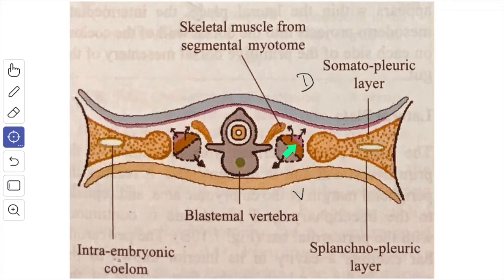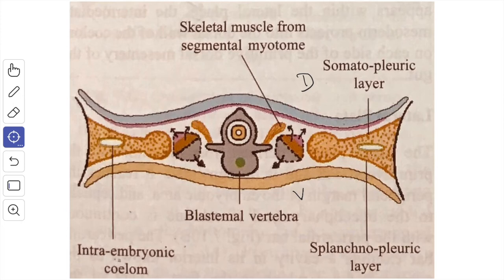The cells of the dermal plate spread beneath the overlying ectoderm and form the dermis of the skin and subcutaneous tissue. The muscle plate or myotome gives rise to spindle-shaped cells of skeletal muscle, and each mesodermal somite is supplied by the nerve of the corresponding spinal segment. The segmental muscle may be attached to the corresponding vertebrae or migrate elsewhere, but once innervated by a spinal nerve it does not lose that nerve supply. Out of the 44 pairs of post-aortic somites: 4 are occipital, 8 cervical, 12 thoracic, 5 lumbar, 5 sacral, and 8 to 10 coccygeal. The sclerotome portion of the somite gives rise to the development of the vertebral column and the ribs.